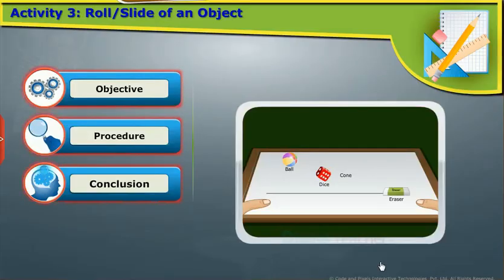Here, we will do an activity to check why some objects can only be rolled and why some only slide. Why can some objects both roll and slide?